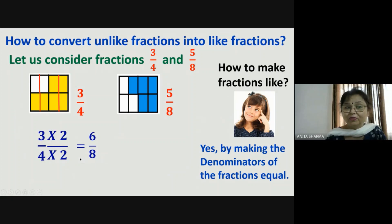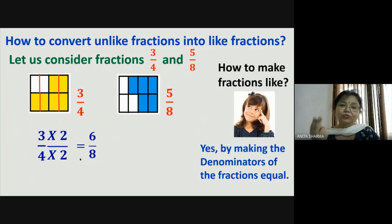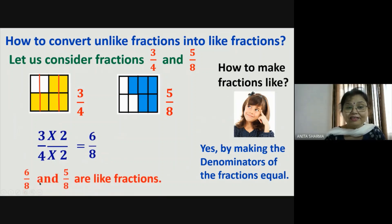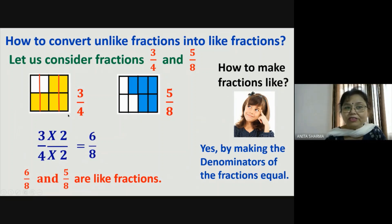Four parts become eight parts and three parts convert into six, because four times two is eight and three times two is six. So six-eighth and five-eighth are now like fractions. The whole is now divided into eight parts in both cases, confirming that three-fourth is equivalent to six-eighth.